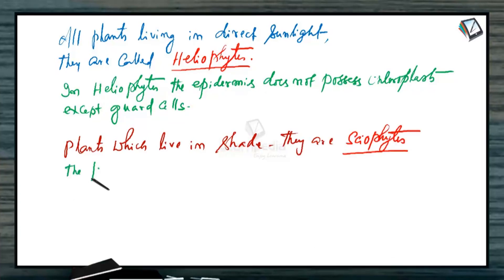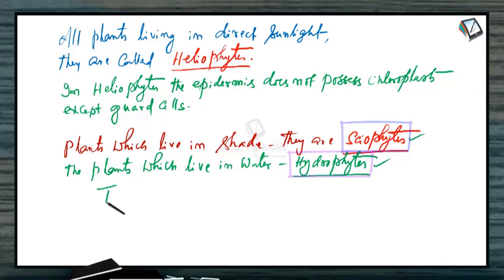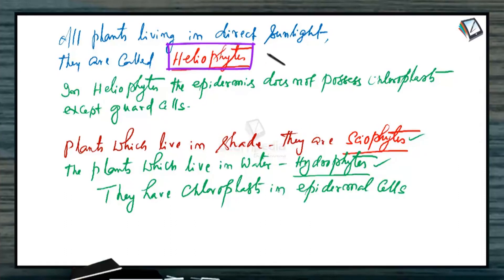And the plants which live in water, they are hydrophytes. These sciophytes and hydrophytes, they have chloroplasts in epidermal cells. You should note this difference between heliophytes and the sciophytes and hydrophytes. Accordingly, the heliophytes do not possess chloroplasts in epidermis except guard cells. But these plants, they have chloroplasts in the entire epidermis.